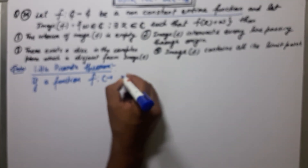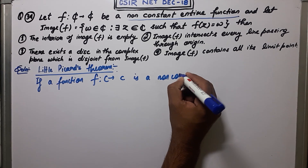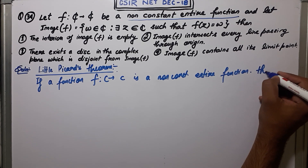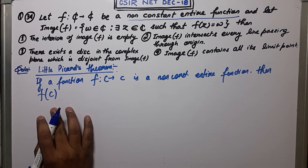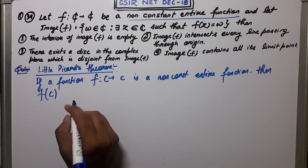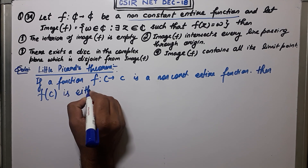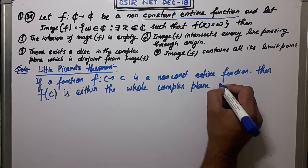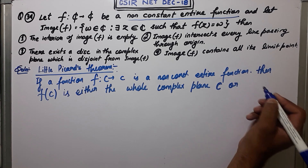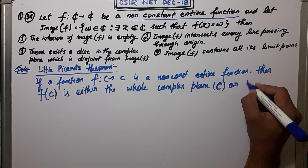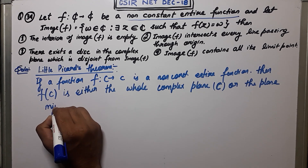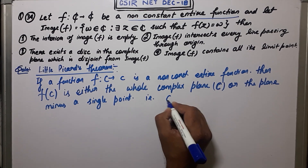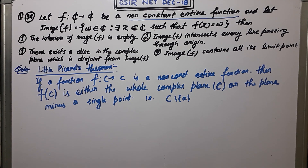Little Picard's Theorem states: if f from C to C is a non-constant entire function, then f(C) — which is the image of f — is either the whole complex plane C, or the whole complex plane minus a single point, i.e., C minus a singleton set.